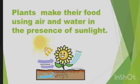Plants also make their food using air and water in the presence of sunlight. When plants make their food, they use carbon dioxide from the air. Can you see in this picture? The plant is using light energy, carbon dioxide from the air and water. And it is leaving out fresh air that is oxygen for human beings.